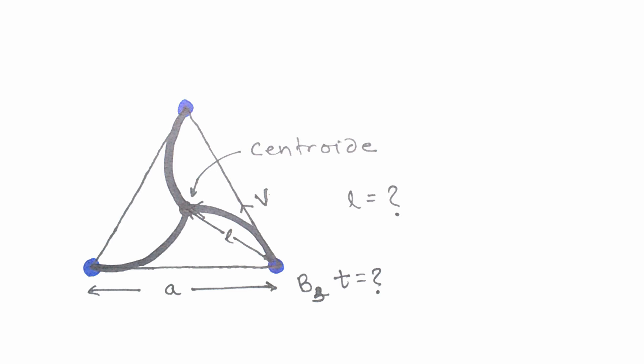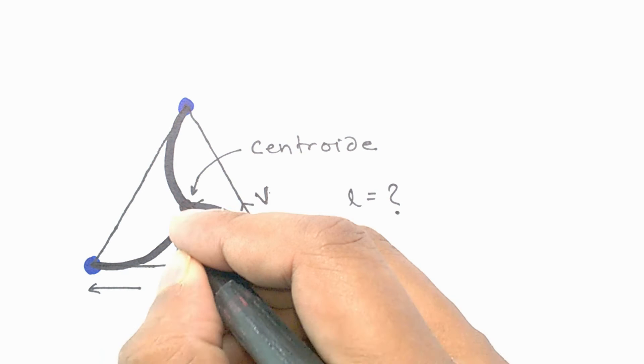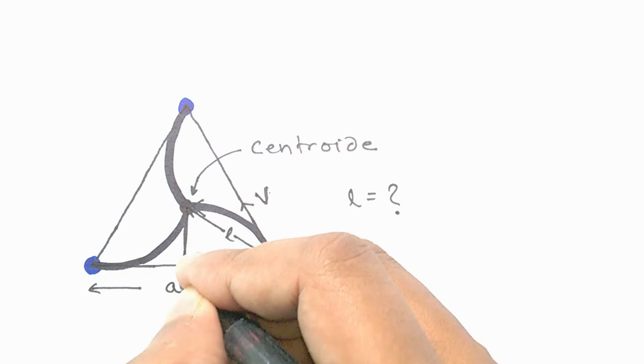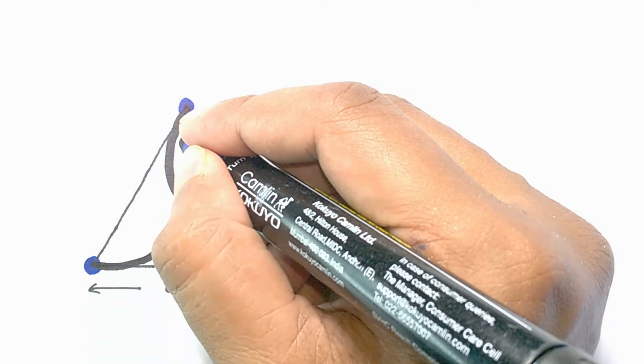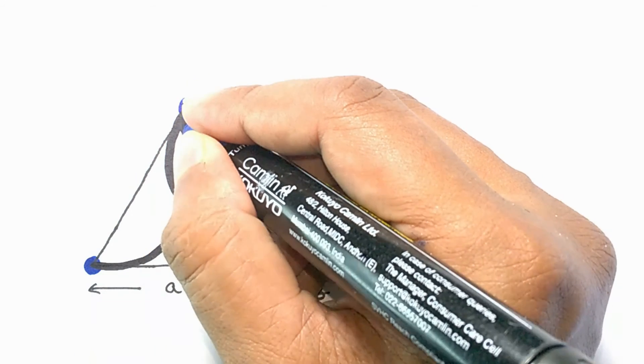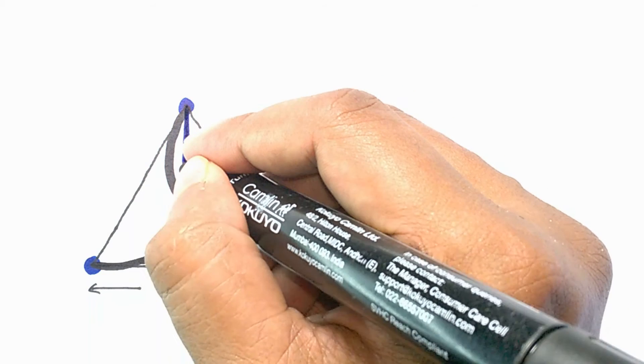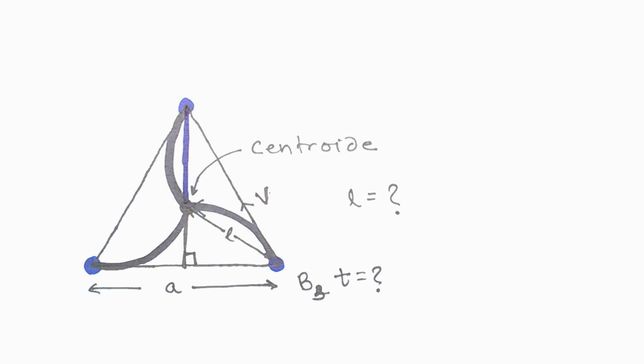To solve the problem, we will draw a line perpendicular to the base of the triangle from the centroid. This line happens to be the extension of the same line which is joining the first vertex to the centroid.